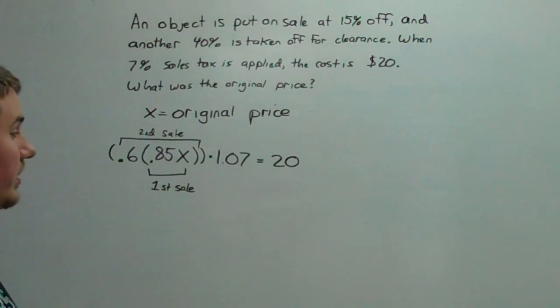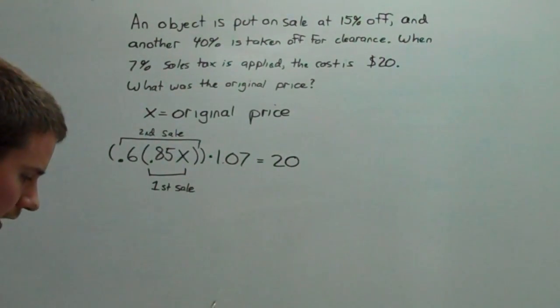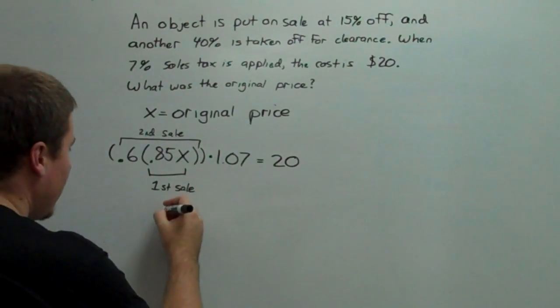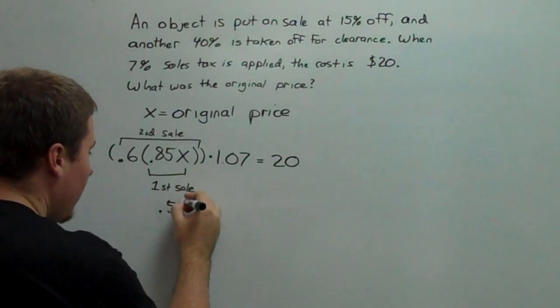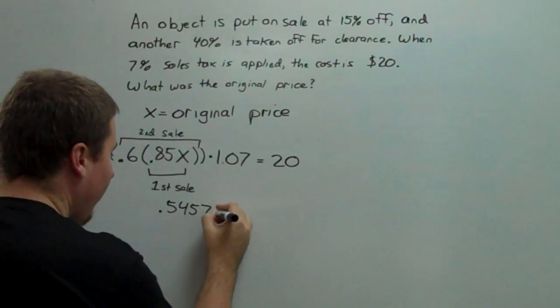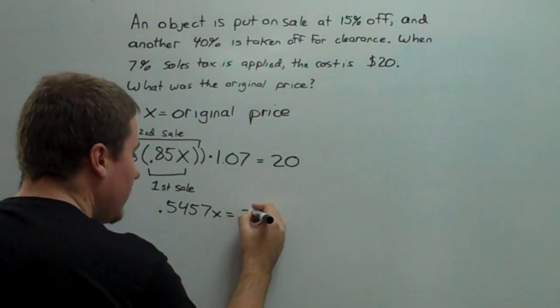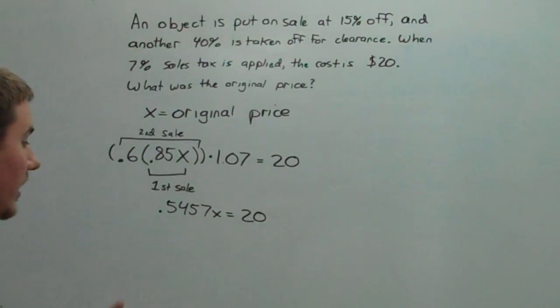Now, because of the commutativity of multiplication, I can multiply these three things together and get 0.5457. And at this point, I can say that the sale, which left us with 54%, means that the sale itself was about 45% when all things are taken into account.